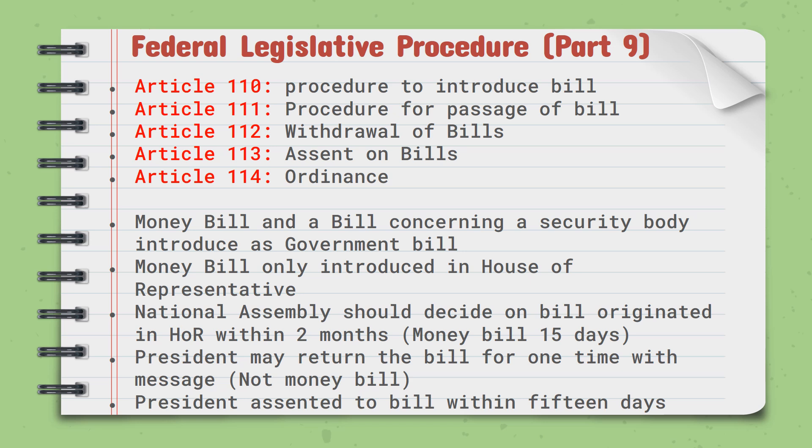Here are some special provisions. The money bill and a bill concerning security bodies can only be introduced as a government bill. The money bill can only be introduced in the House of Representatives — we cannot present a money bill to the National Assembly at the beginning. The National Assembly should decide on a bill originated in the House of Representatives within two months, but for a money bill it should decide within 15 days. The President may return the bill one time with a message, but for the money bill, she or he must assent within 15 days and cannot return it. In both cases, the President should assent to the bill within 15 days.